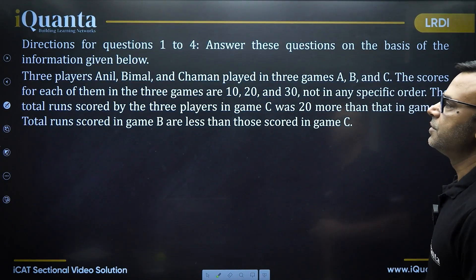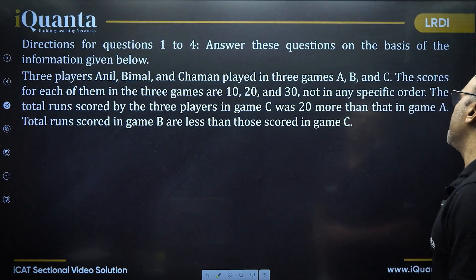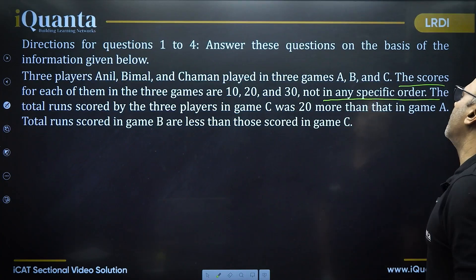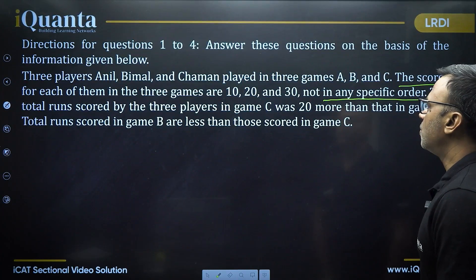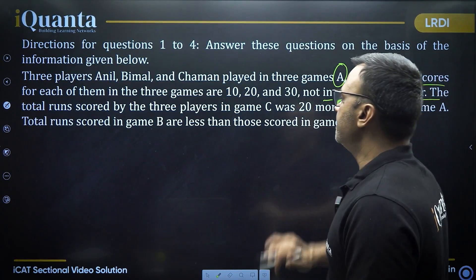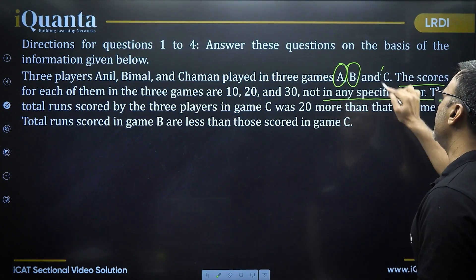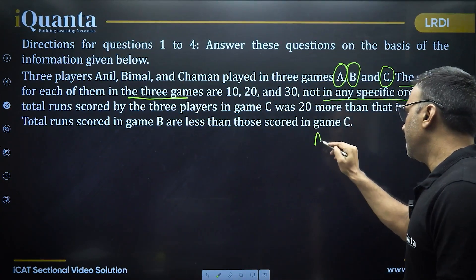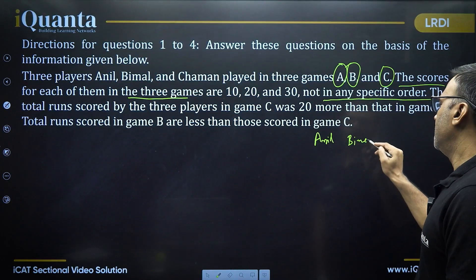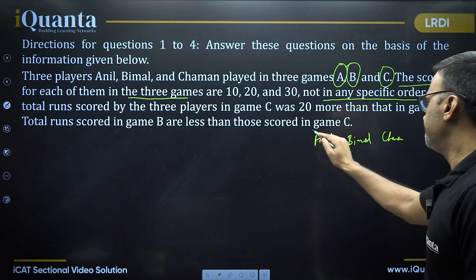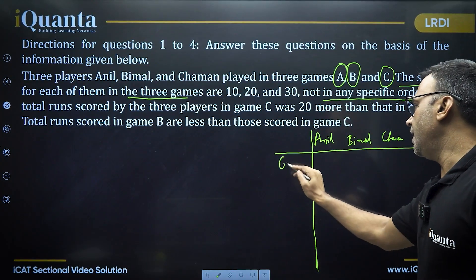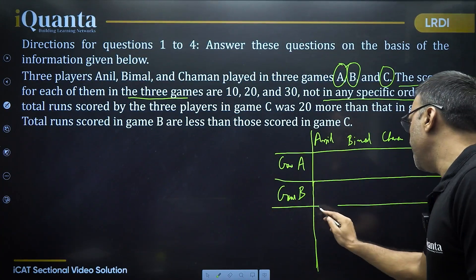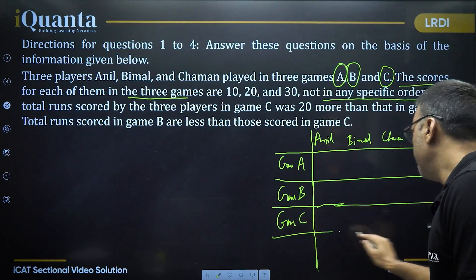Answer the questions based on the information given below. Three players — Anil, Bimal, and Chaman — played in three games: A, B, and C. The scores of each of them in the three games are 10, 20, 30, not in a specific order. Now this is the most crucial information. So what it means is: game A scores 10, 20, 30; game B scores 10, 20, 30; game C also scores 10, 20, 30. I will write a table: Anil, Bimal, Chaman as rows, and game A, game B, game C, and total as columns.